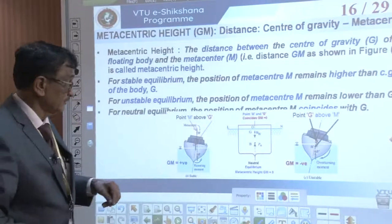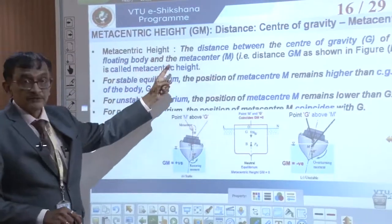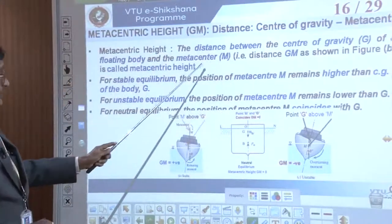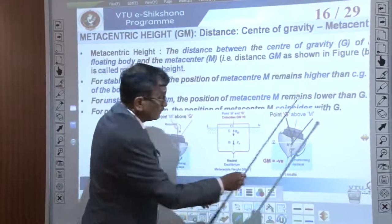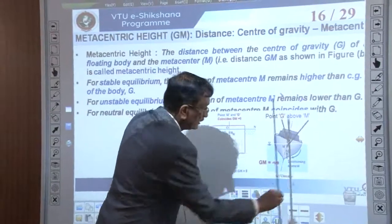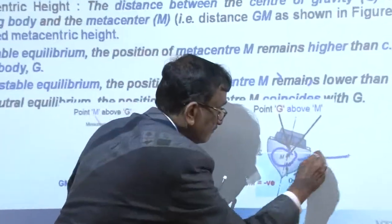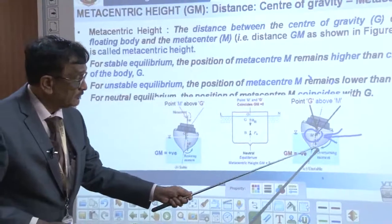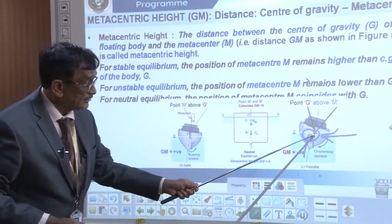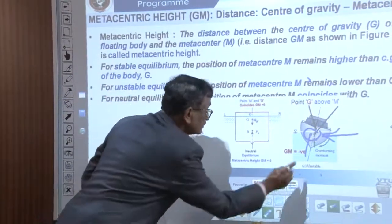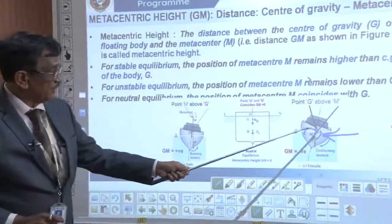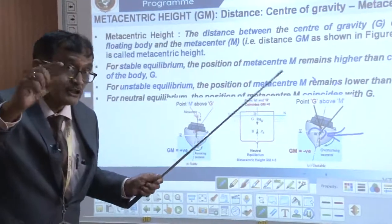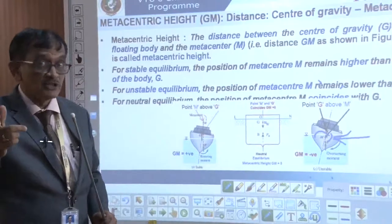The metacentric height is the distance between the center of gravity G and the metacenter M. The metacenter M is the point where the line of action of the buoyant force in the tilted position intersects the original vertical line through B and G. You can see the two lines intersecting at point M — that point is the metacenter.